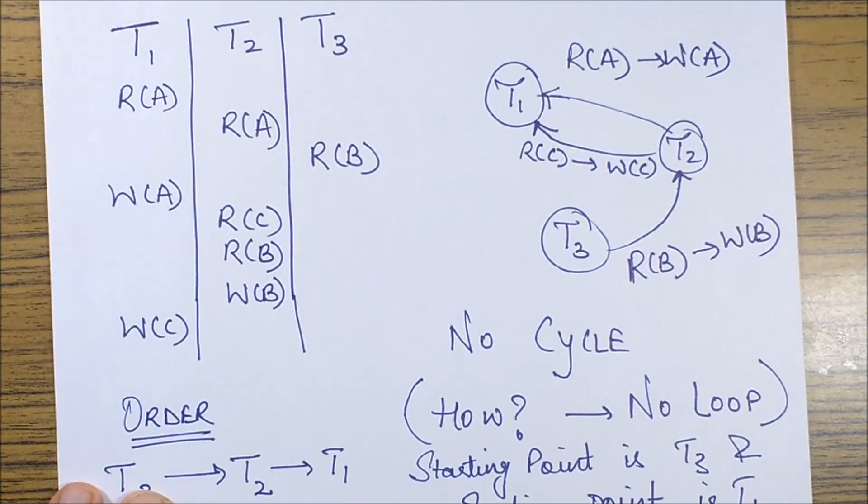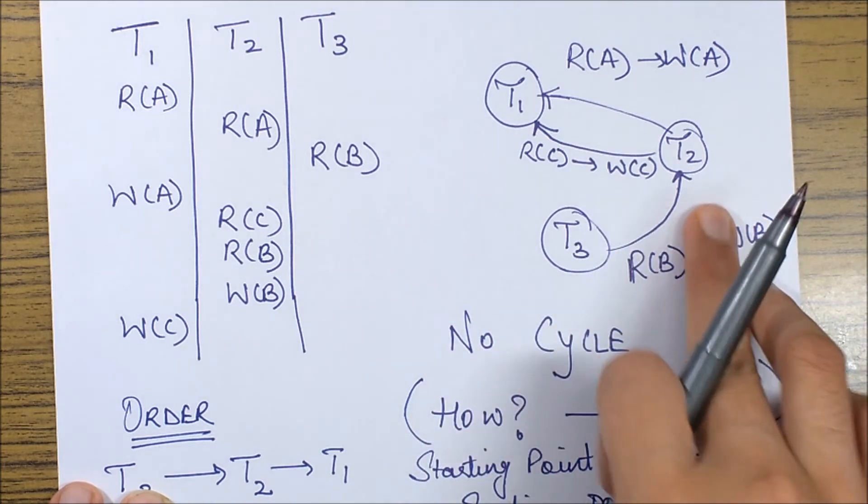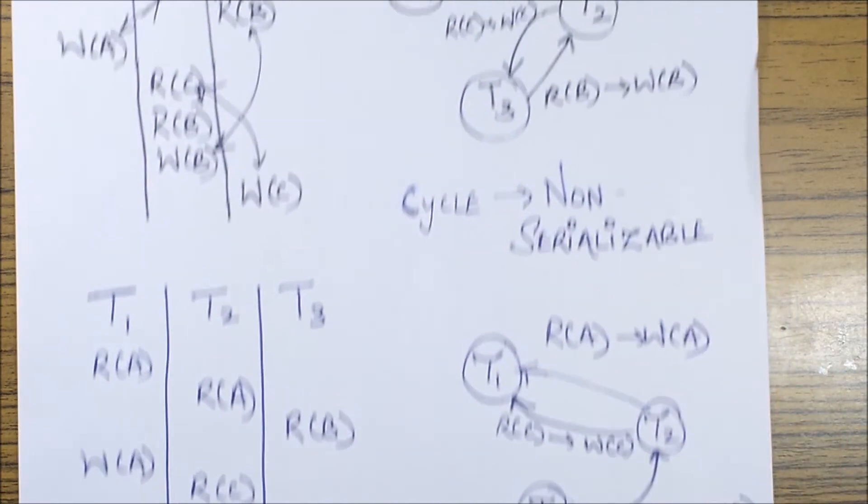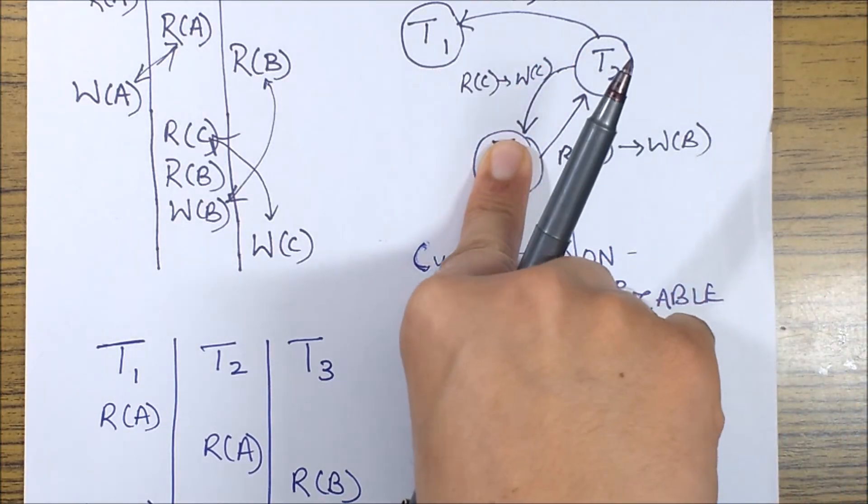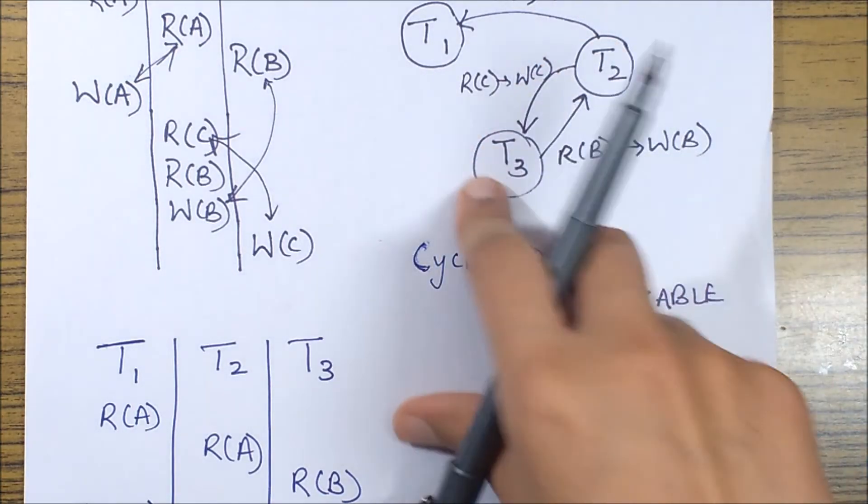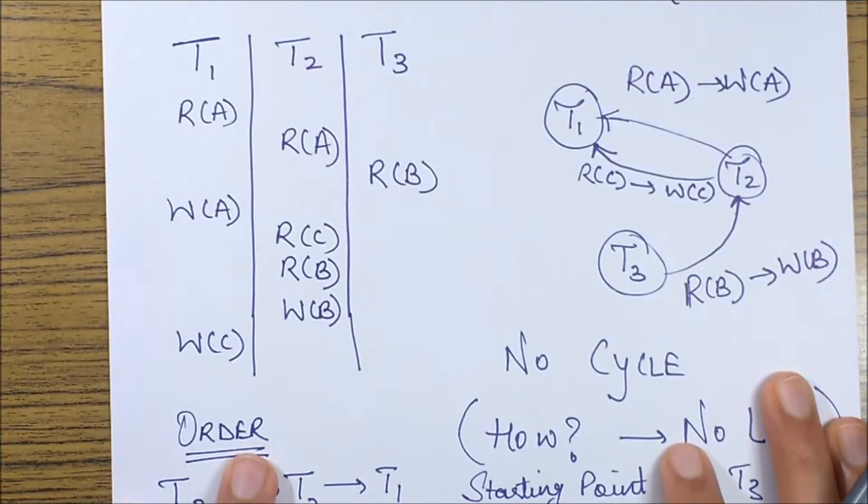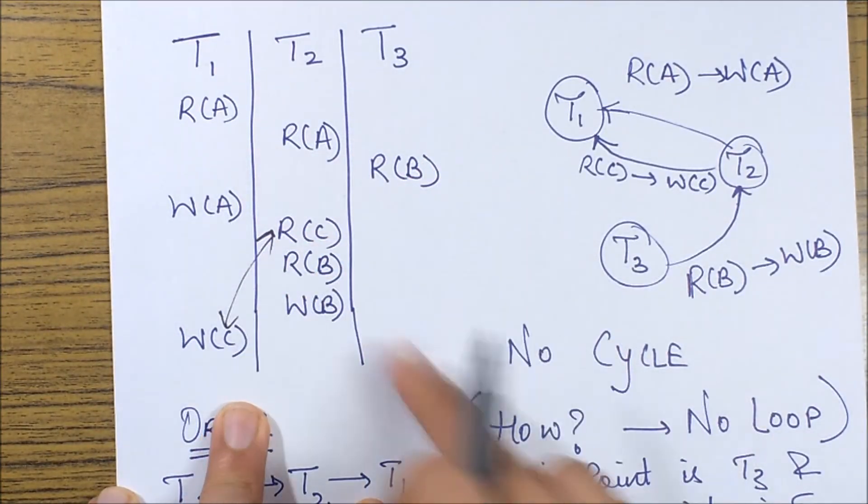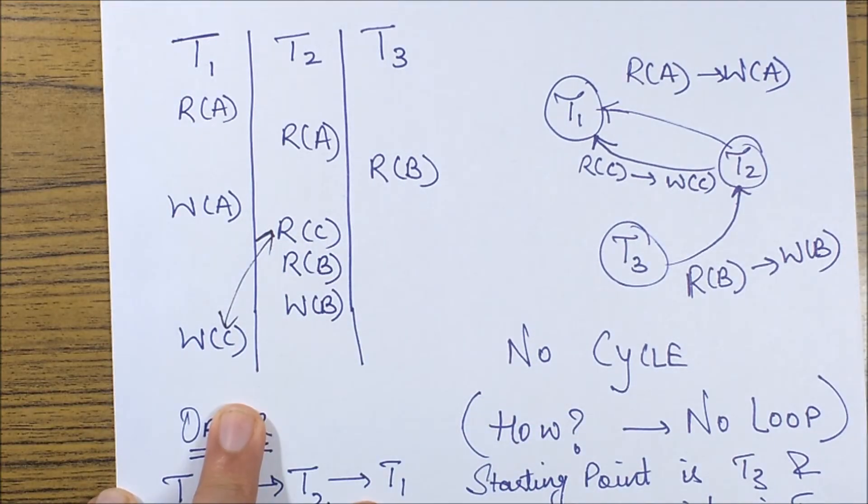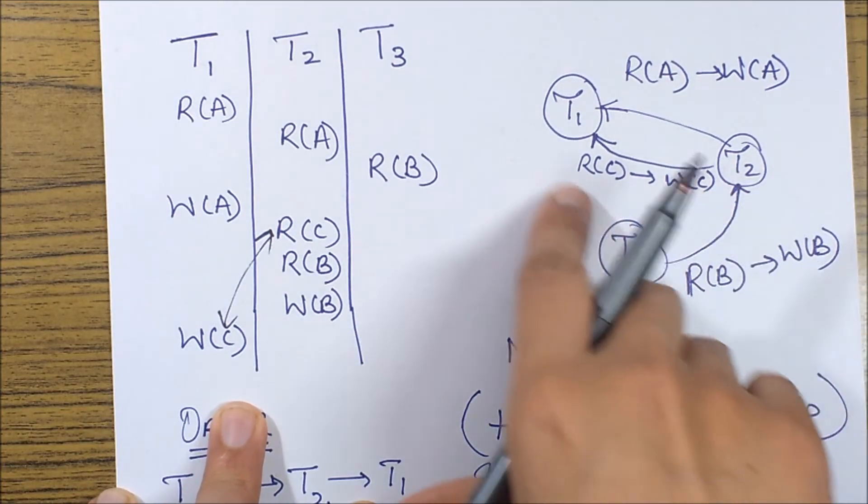Now in this case if I plot the operations what will happen is this edge will actually be changed, the rest would remain same. So let's just check this edge only. So it will be from T2 to T1. So I'll mark it from T2 to T1.